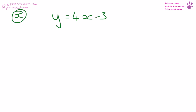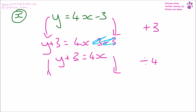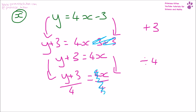y = 4x − 3, and we want to make x the subject of the formula. The first thing we need to do is add three to each side. What we end up with is y + 3 = 4x − 3 + 3. Because we have minus three plus three, this cancels out, so we end up with y + 3 = 4x. We want to get x on its own — it's currently times by four — so we divide by four. y + 3 over 4 = 4x divided by 4. This four divided by four cancels out, so the answer is y + 3 over 4 = x.